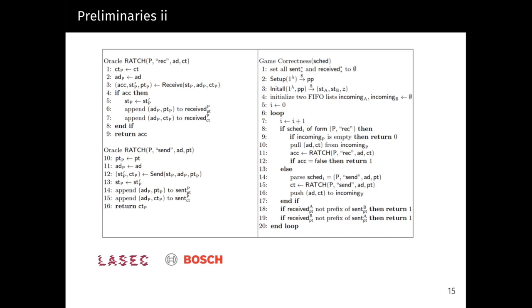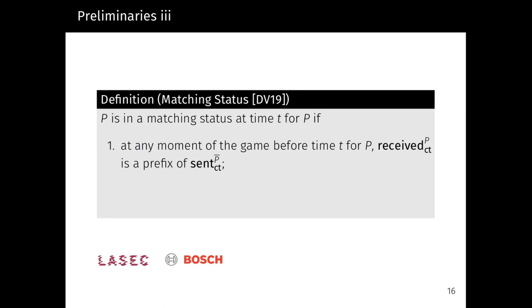In the form of a correctness game, this means that we have two oracles, a send and receive one, that populate a sent and received list for each user. Then, for any schedule of sent and received calls, we demand that the received list of each user is a prefix of the sent list of its counterpart. More formally, we say that the user P is in a matching status at time t if, at any moment of the game before time t, for the user P-bar, we demand that his received list is a prefix of the sent list of the user P-bar.